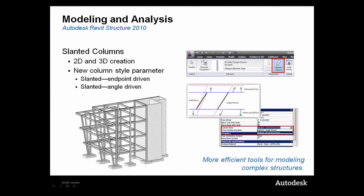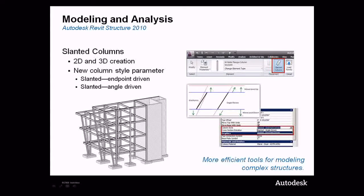Slanted columns are becoming more and more common in larger high-profile projects. The architectural forms that engineers are being required to support are getting more and more complex. Engineers and drafters can now create slanted columns using the same column families they use for vertical columns, which include not only physical characteristics, but also analytical.